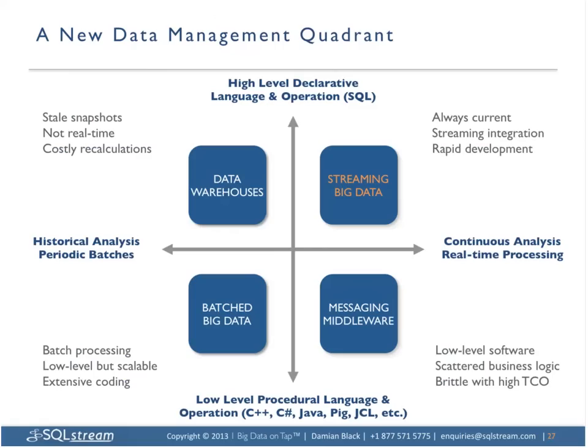We think this is an important new missing data management quadrant. At the top level you have high-level declarative — you specify what you want and let the system optimize the processing. At the bottom level is low-level imperative — you go step by step and build programs. On the left is historical analysis performed on demand; on the right is continuous analysis performed real time. Top left is data warehousing and relational databases — running high-level declarative SQL on demand. What we do is run those databases better — we query the future continuously and enhance that continuous analysis with on-demand query results from databases.